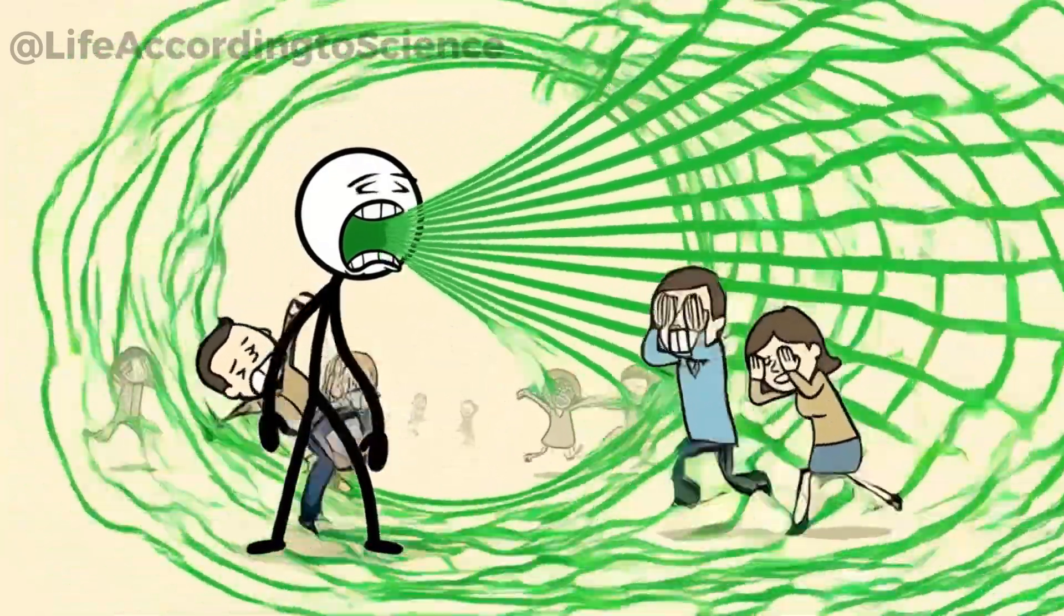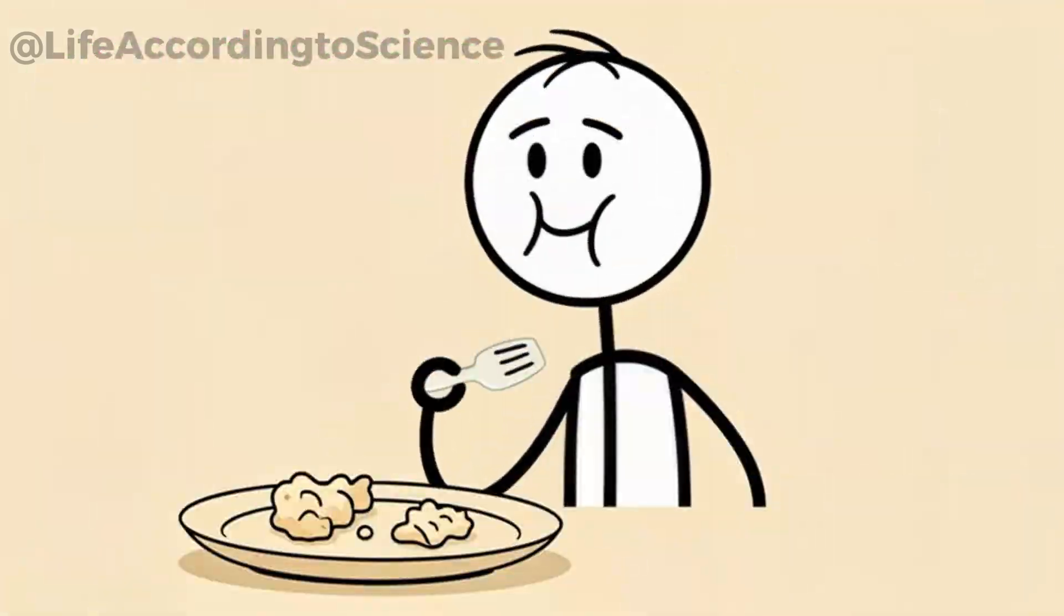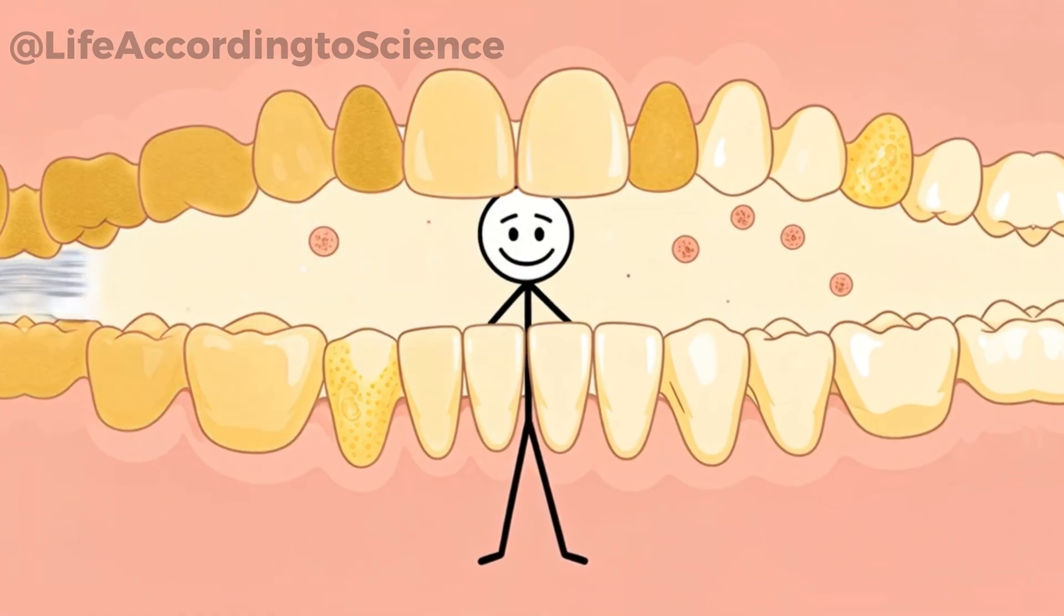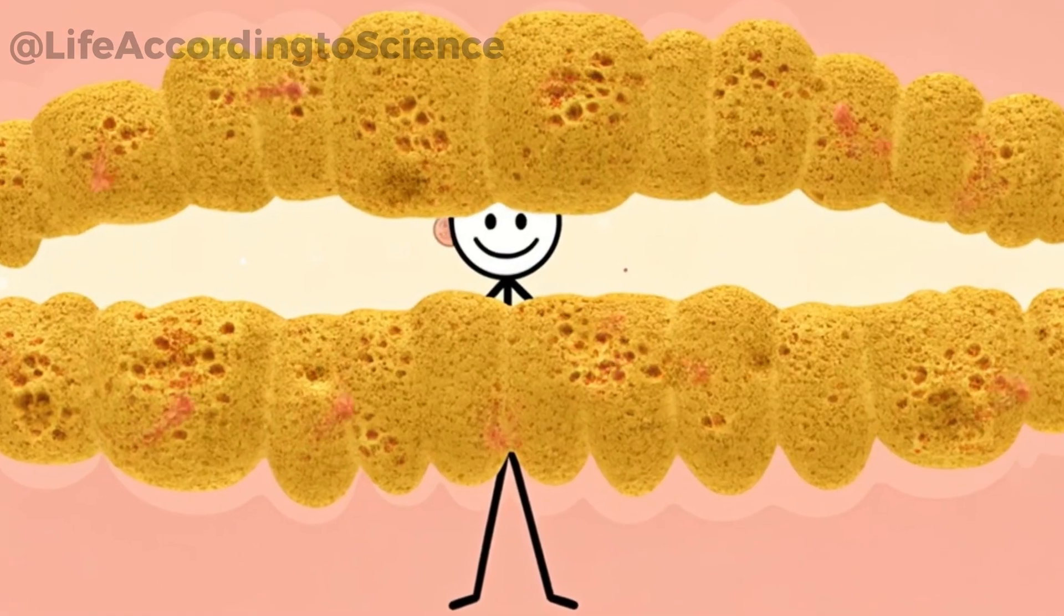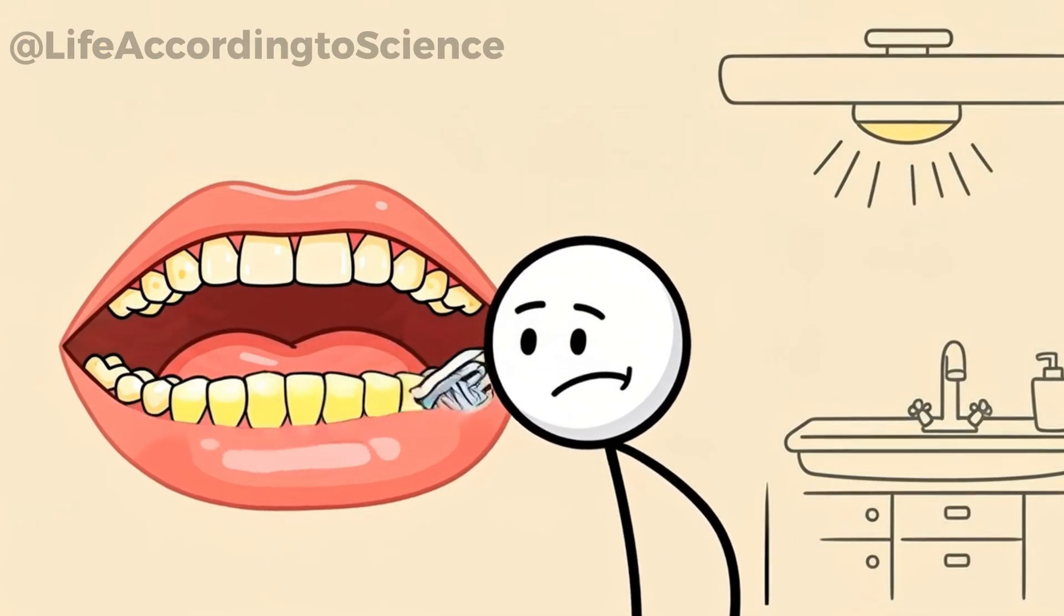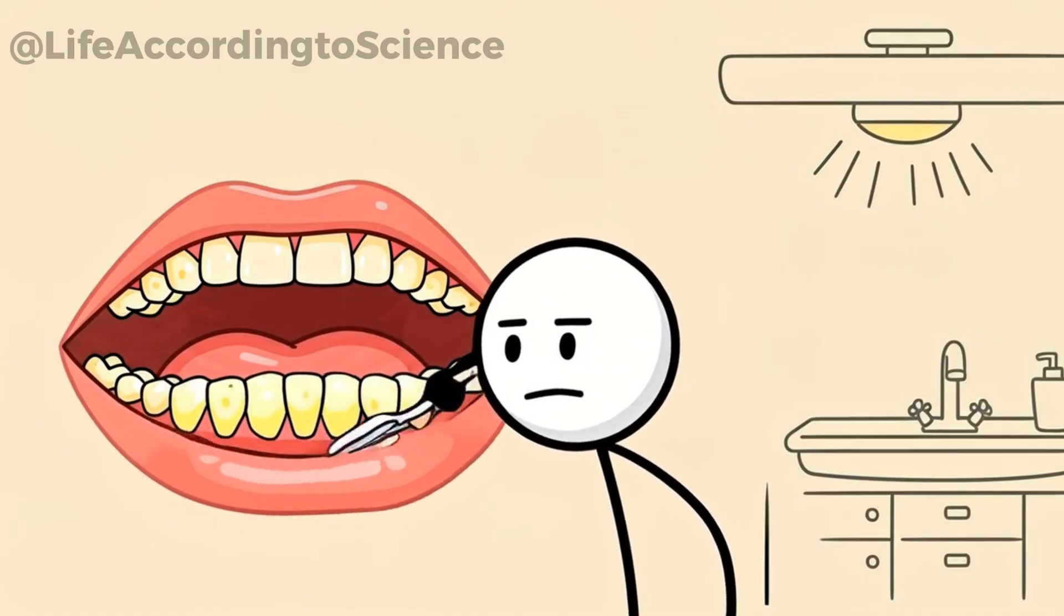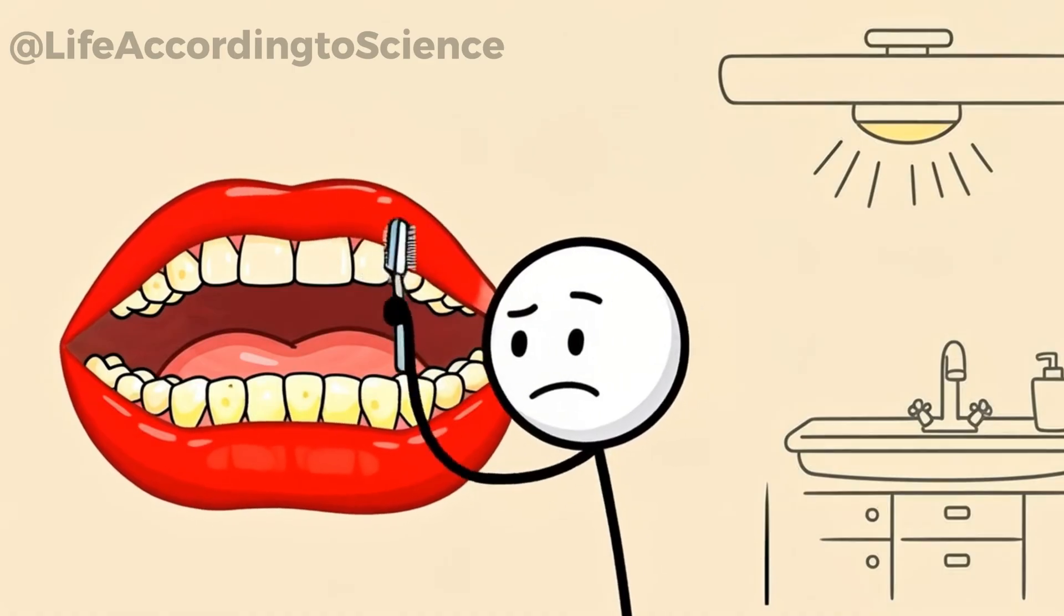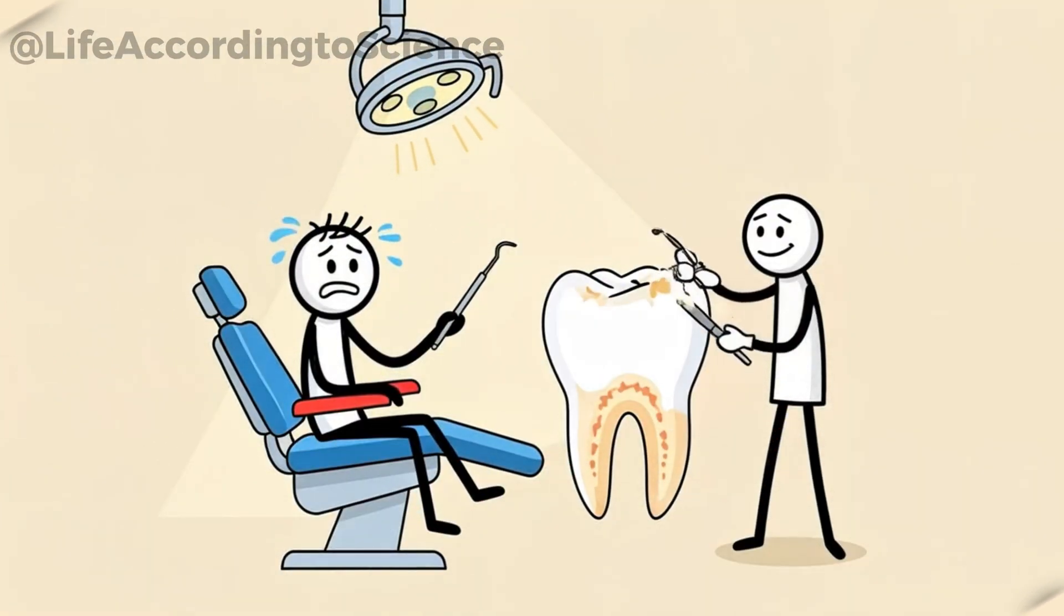Plaque is like an invisible enemy. You can't always see it, but it coats your teeth after every meal, especially without brushing. Over six months, this thin film hardens into tartar, a rough surface that traps even more bacteria. As tartar accumulates, it irritates your gums and shields bacteria from being removed. Once hardened, no amount of regular brushing can eliminate it. You need a professional dental cleaning.